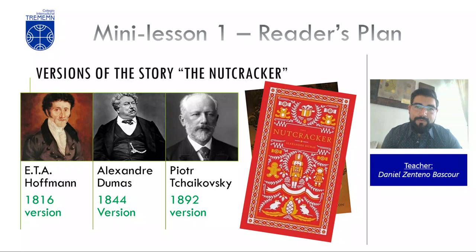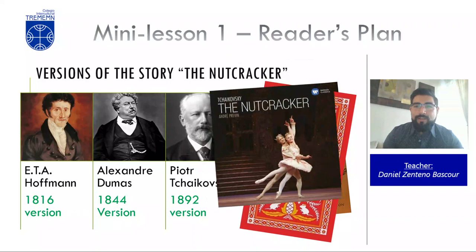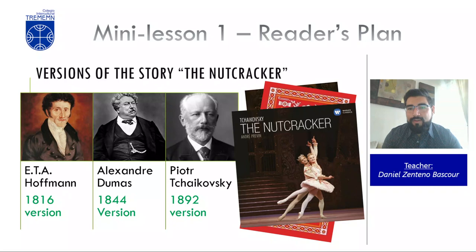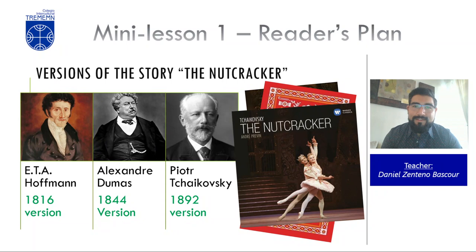The second version was simply called The Nutcracker, written by the French author Alexandre Dumas. This version is softer and eliminates the darker elements that the original had. It also changed the name of the protagonist from Mary to Clara. Then, based on the same version, Tchaikovsky created the ballet The Nutcracker in 1892. This version added an important new character, the Sugar Plum Fairy, who brings fantasy aspects that the ballet format permits to appreciate more than the book would.